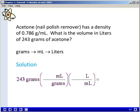In our first step, we want to convert from grams to milliliters. So we'll place the unit of milliliter in the numerator and the unit of grams in the denominator. This will allow the units of grams to cancel.